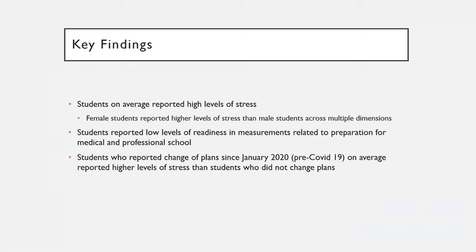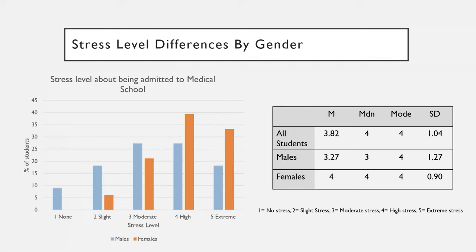Some key findings include the fact that students on average reported high levels of stress. Interestingly, female students reported higher levels of stress than male students across multiple dimensions. Students also reported low levels of readiness when it came to their preparation for medical and professional school. Students who reported a change of plans since January 2020 — which I'm taking as pre-COVID-19 pandemic times — on average also reported higher levels of stress than students who mentioned no change of plans. Students were asked to rate their stress level about being admitted to medical school on a scale of one to five, and on average reported close to high stress.